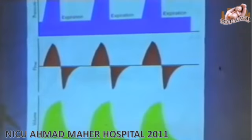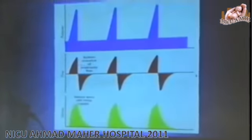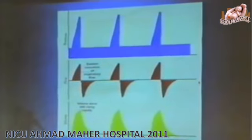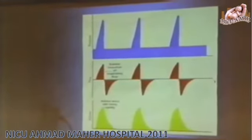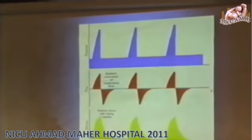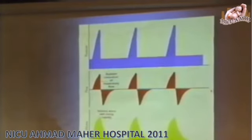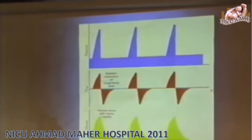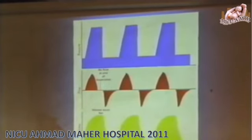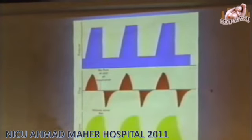Comparing two waveforms: the blue one is narrower — it reaches the same peak but the flow wave is narrower. This happens when I decrease the inspiratory time. The blue waveform becomes narrower because there is now a shorter eye time. Conversely, if I increase the eye time, the blue waveform becomes wider — a longer inspiratory time.